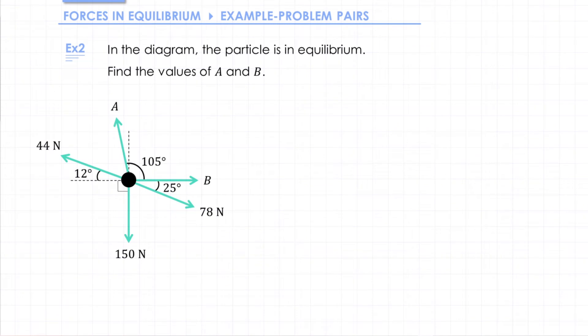Example 2. In the diagram we've got another particle in equilibrium and we want to find the values of A and B. This problem is similar to the last one we did but there are a couple of differences. First of all we've got more forces involved so more resolving to do, and second of all we have an angle that's larger than 90 degrees so we'll look at how we're going to deal with that as well.